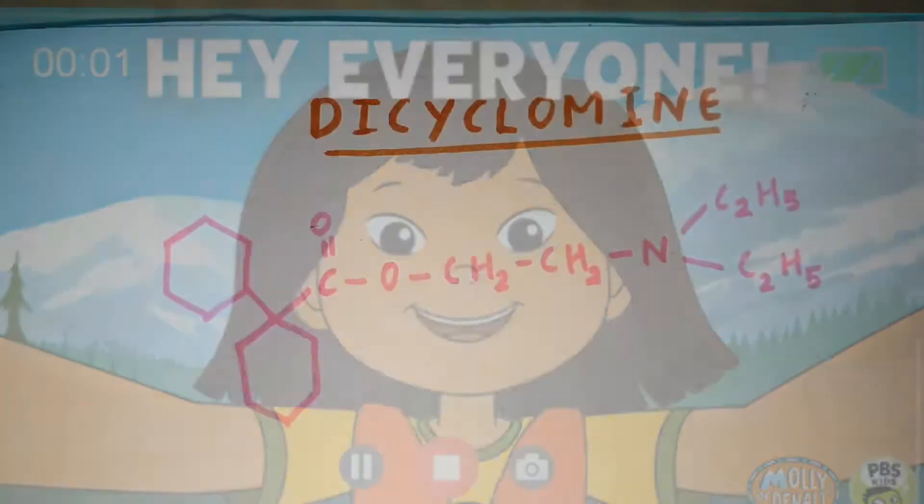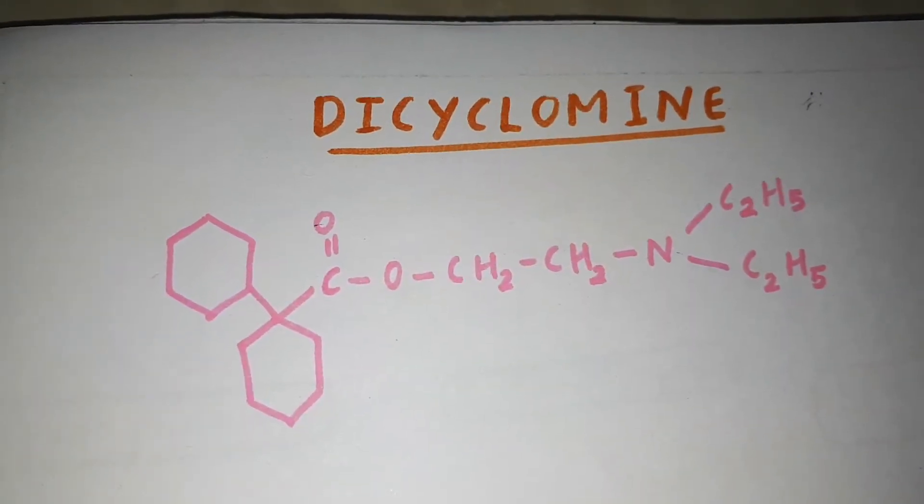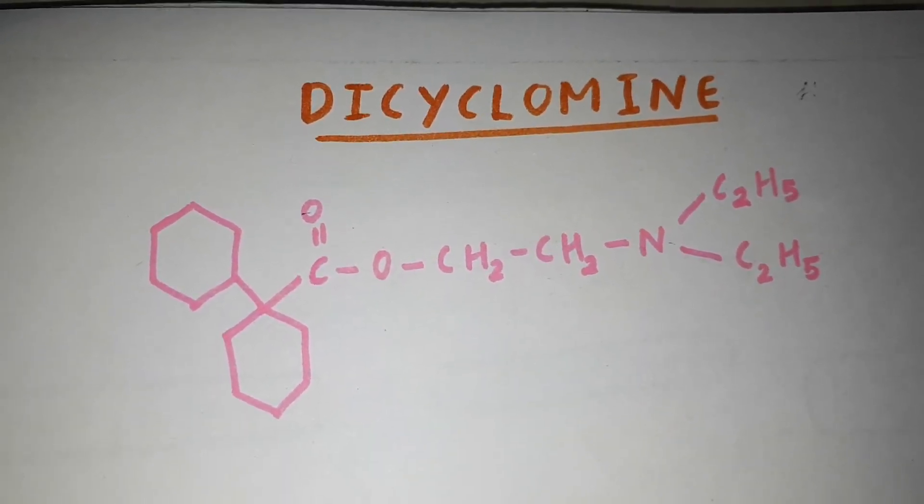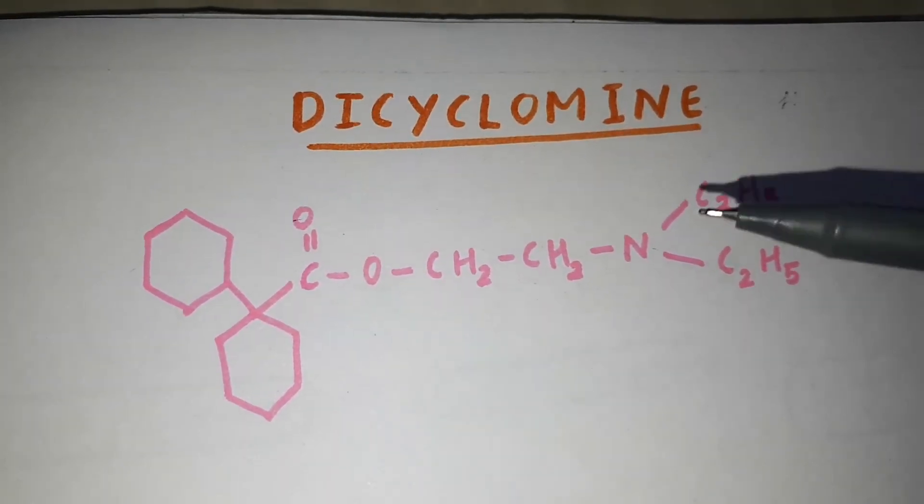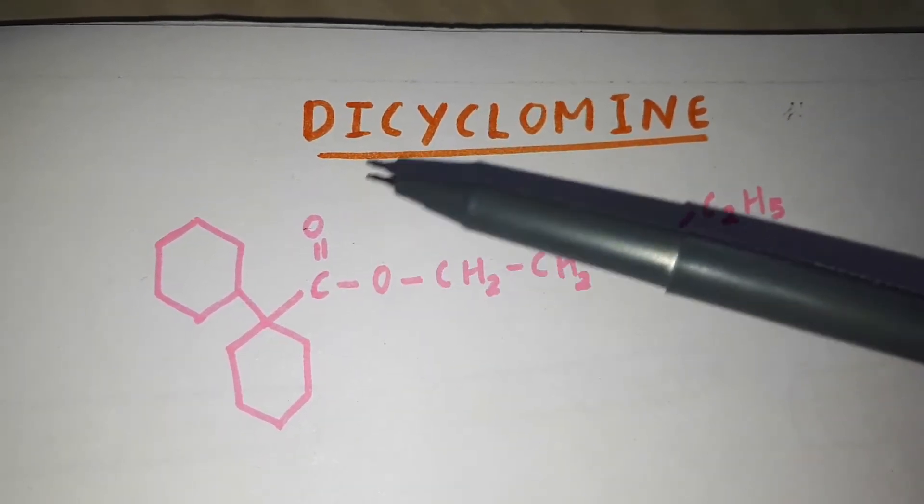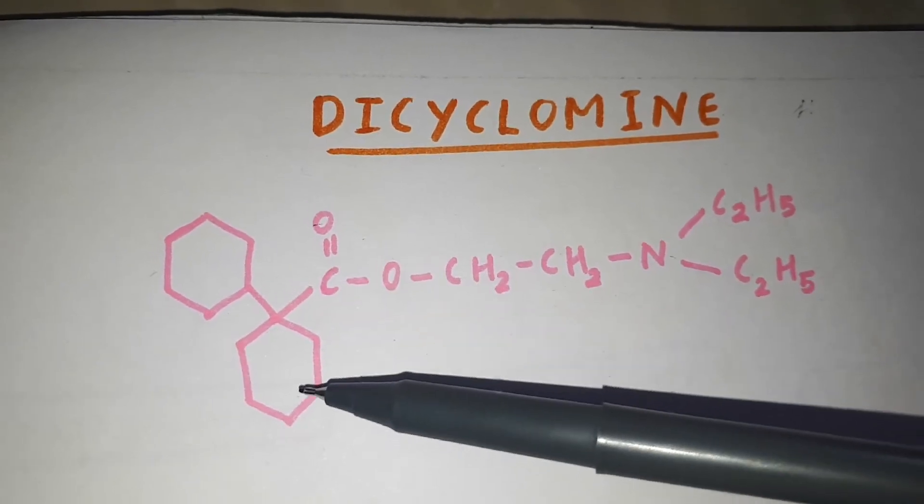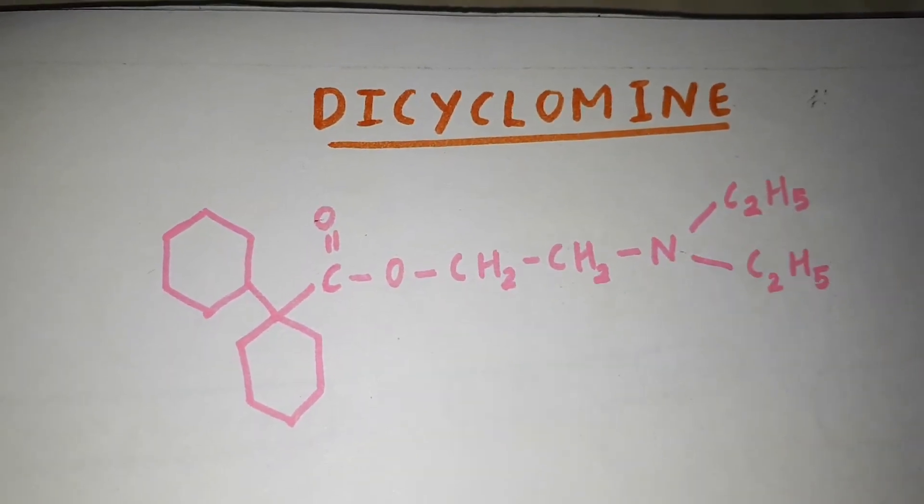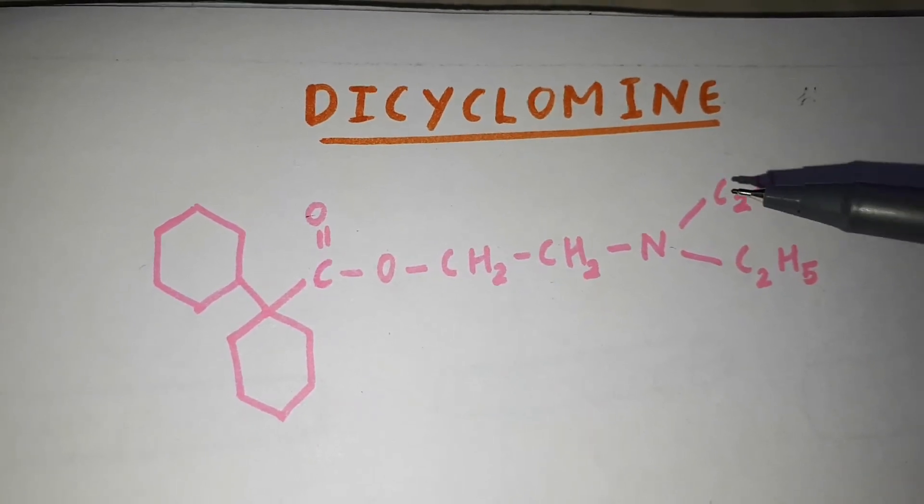Hey everyone, today we'll learn about dicyclomine, which is an anticholinergic agent. This is the structure of dicyclomine. As the name indicates, there are two cyclic rings, hence dicyclo, and there is an amino group.